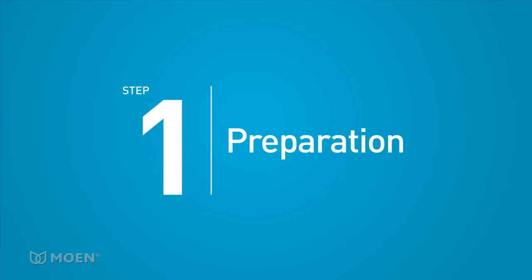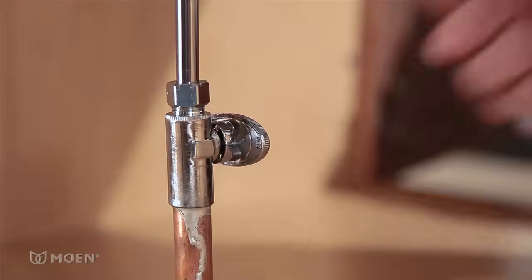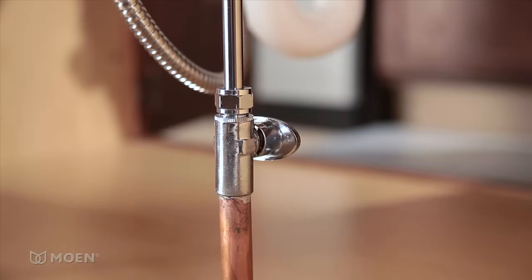Step 1. Preparation. Before getting started, turn off the hot and cold water inlets for your kitchen faucet. They're usually located in the cabinet below the faucet.